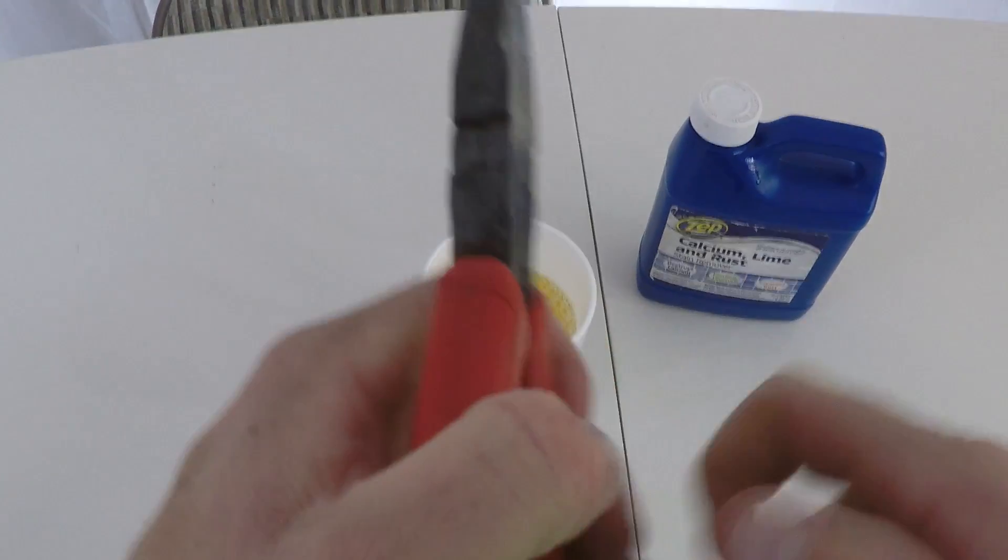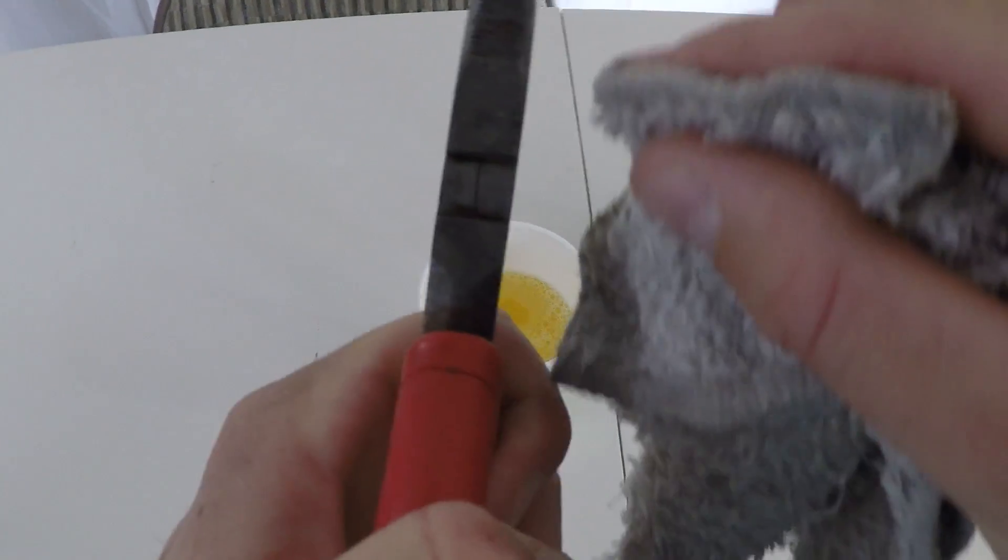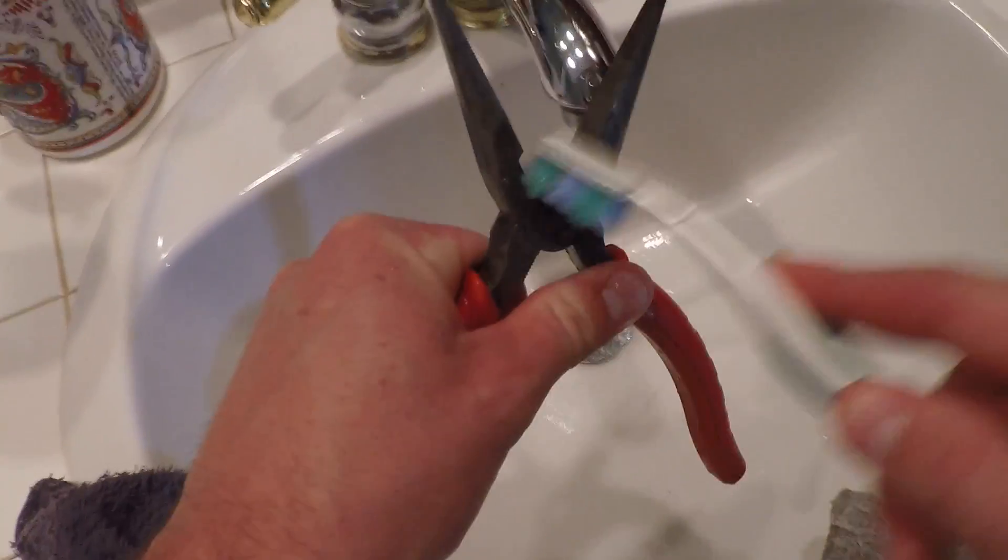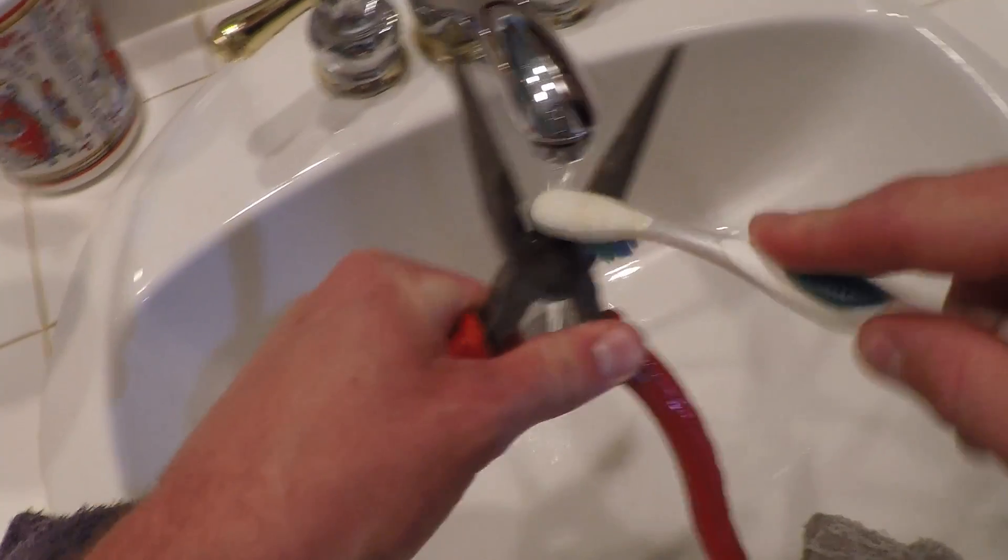So if you run it under some water, it'll get all that rust out of those areas. If you need to, just take a toothbrush and get all the crevices there. All the rust is just melting away.